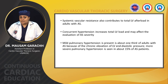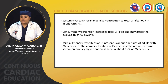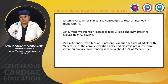Systolic vascular resistance also contributes to total LV afterload in adults with aortic stenosis. Concurrent hypertension increases total LV load and may affect evaluation of aortic stenosis severity. Mild pulmonary hypertension is present in about one-third of adults with aortic stenosis. More severe pulmonary hypertension is seen in about 15% of aortic stenosis patients. Exercise physiology is abnormal even in asymptomatic patients with moderate to severe aortic stenosis, who have reduced exercise tolerance.